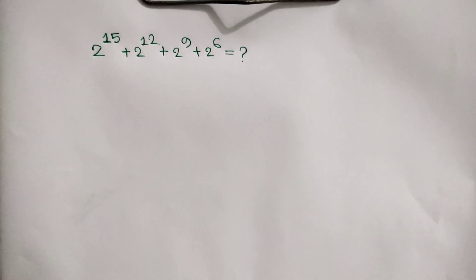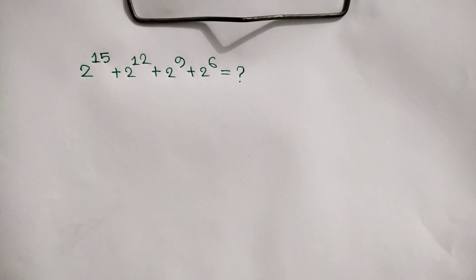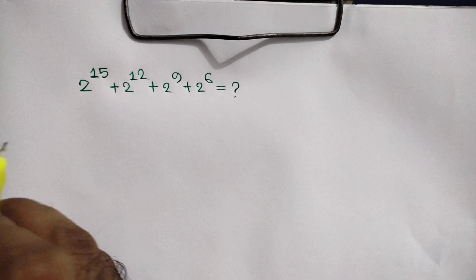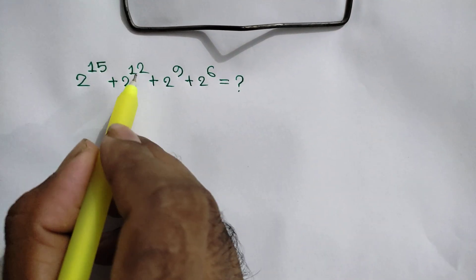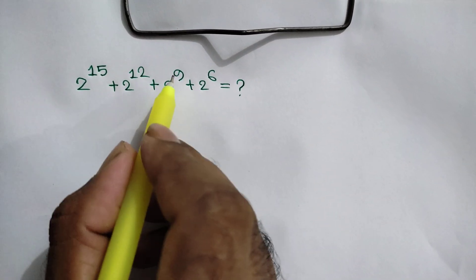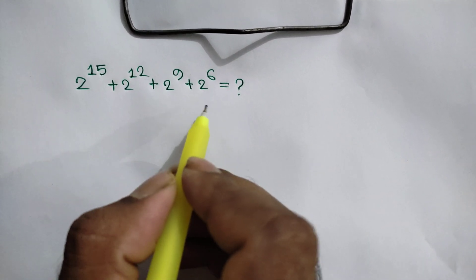Hi everyone. In this video I am going to show how to simplify this Russian math olympiad problem where 2 to the power 15 plus 2 to the power 12 plus 2 to the power 8 plus 2 to the power 6 is equal to what? Calculator not allowed.